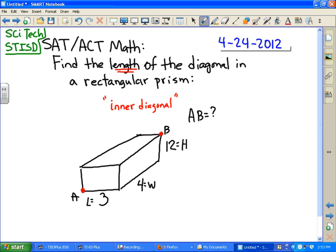And really what we're doing is we're using Pythagorean theorem twice. So we can find the diagonal from A to C. This diagonal, this is a right angle here.